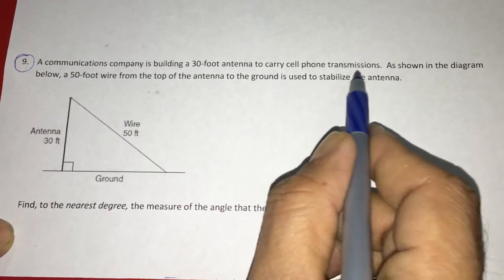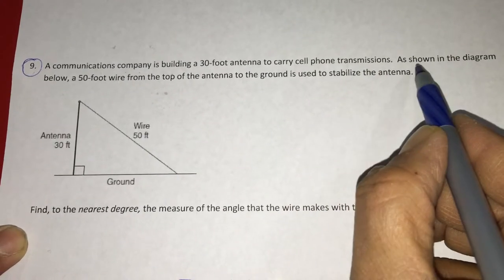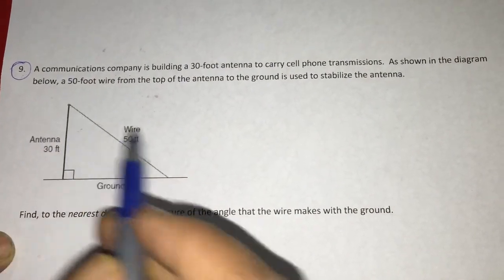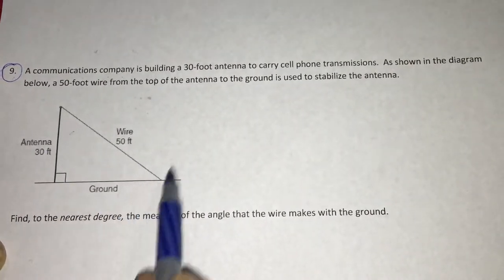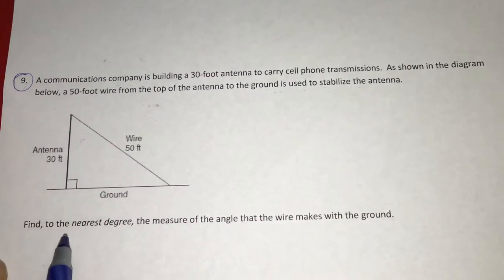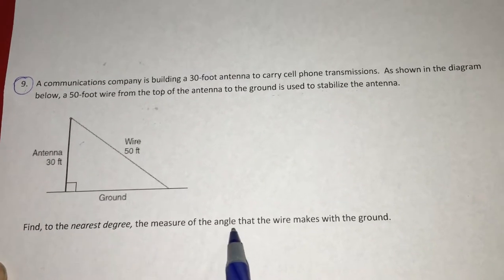As shown in the diagram below, a 50-foot wire from the top of the antenna to the ground is used to stabilize the antenna. Find, to the nearest degree, the measure of the angle that the wire makes with the ground.